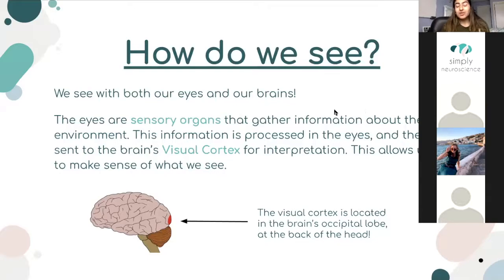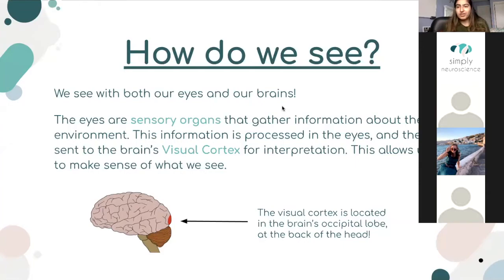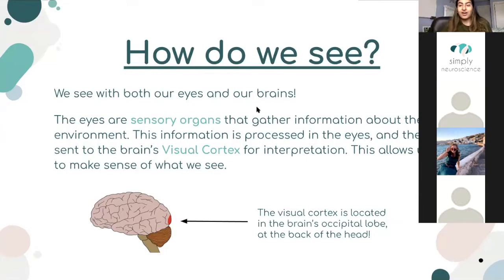We actually see with both our eyes and our brains. The eyes are sensory organs because they gather information from the environment. You might see a window or a certain color, but how do you identify what that color is, or who that person is across the street? All that information from your eyes is processed in the brain's visual cortex, right here at the back of your head. And once it's interpreted, we're able to make sense of what we're seeing.